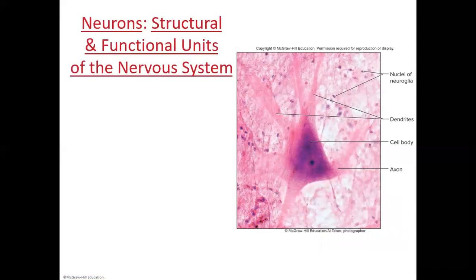Here is a slide of a neuron — it's stained, so it appears pinkish-purple rather than its natural color. You can see the cell body, or soma, with one axon coming off it and many dendrites. The smaller darker purple spots are the nuclei of neuroglia, the supporting cells we'll get to shortly.